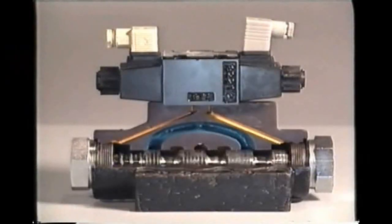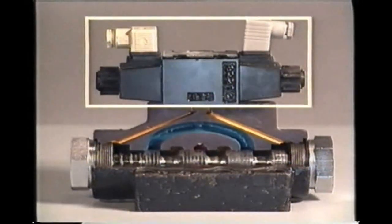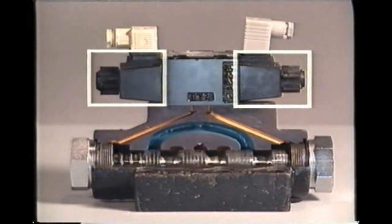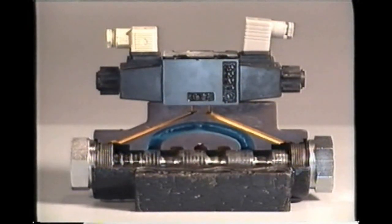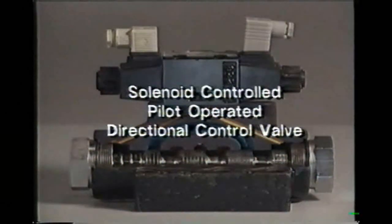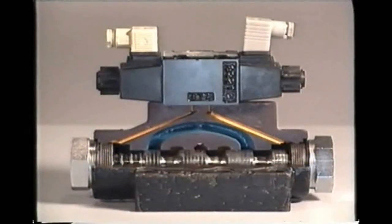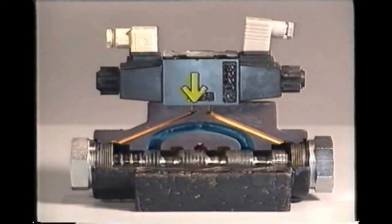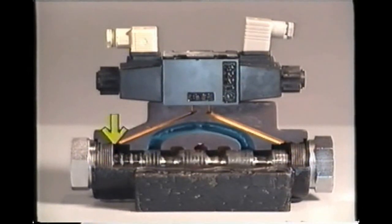When larger size valves are to be electrically actuated, they are usually piggybacked by a smaller valve. The smaller valve mounted directly on the larger valve is operated with solenoids. The hydraulic output of the smaller valve operates the larger valve. Valves like this are called solenoid controlled pilot operated directional control valves. Control of the pilot valve is by solenoid, and movement of the main valve spool is by hydraulic pressure from the pilot valve.